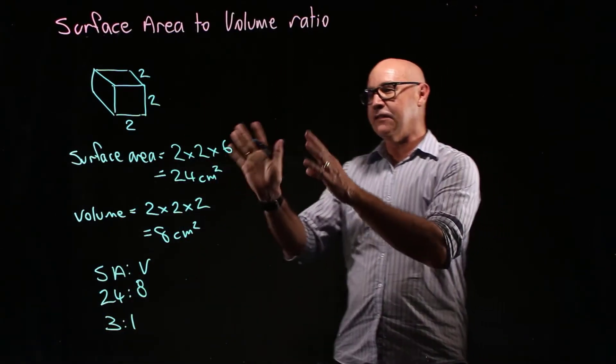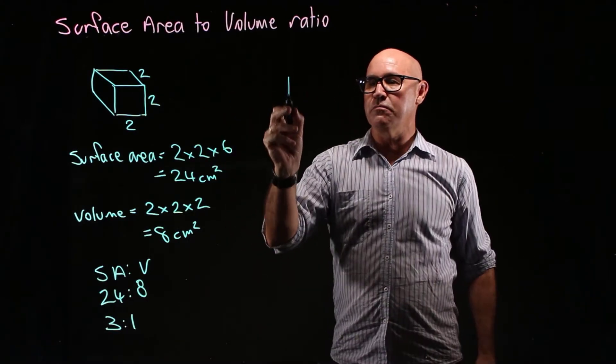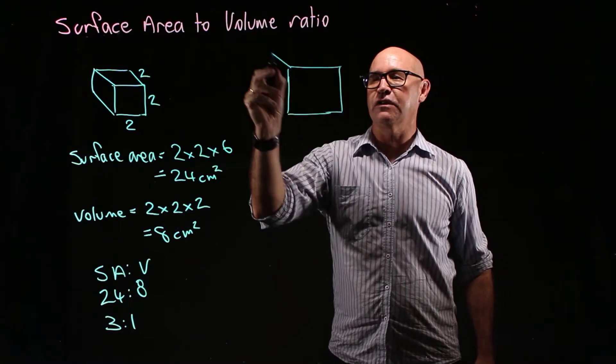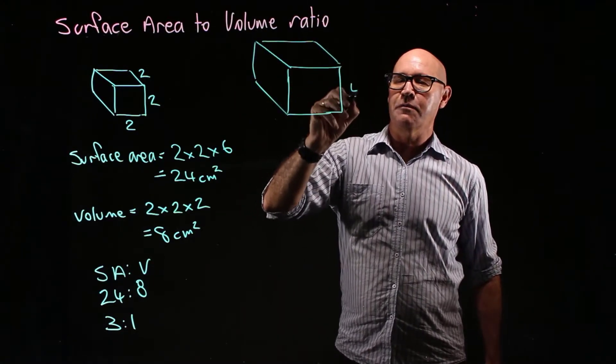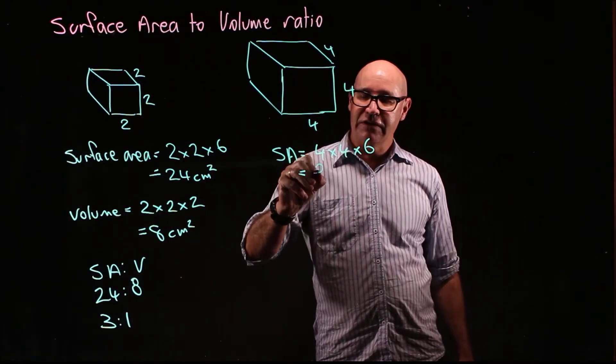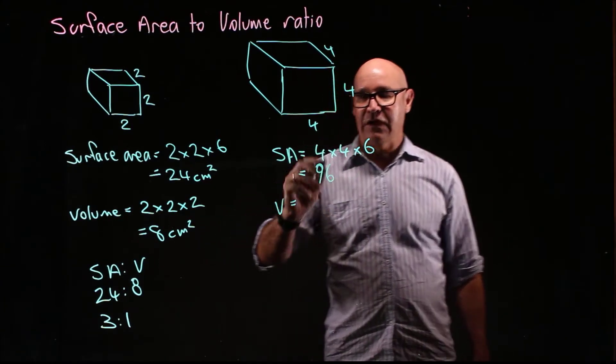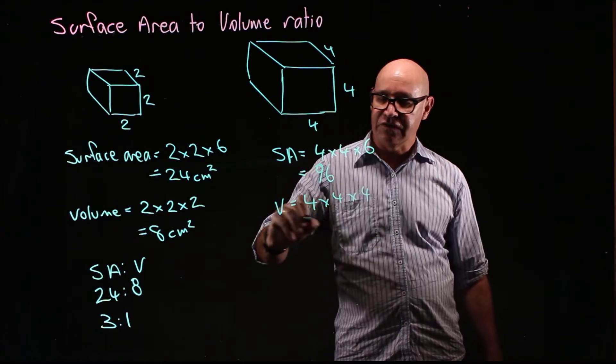Okay, now let's have a look at another cell that's 4 by 4, so it's a bigger cell. Not to scale, warning not to scale. So this time we've got 4 by 4 by 6, which is 96, and the volume is 4 by 4 by 4, which is 64.